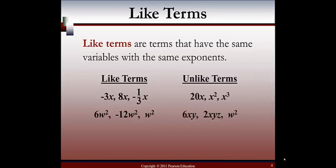Let's look at some unlike terms so we can compare. Our first example shows 20x, x squared, and x to the third. They all have the same variable x, however they do not have the same exponents. 20x has x to the first, the second is x squared, and the third is x cubed. So those do not have the same exponents, meaning those are not like terms.